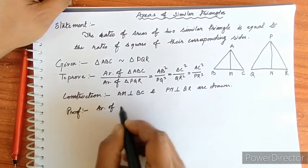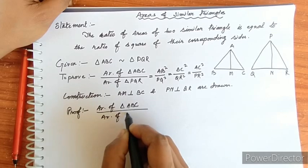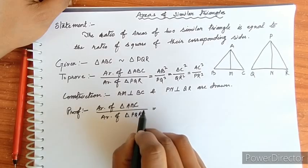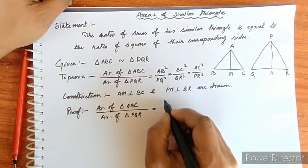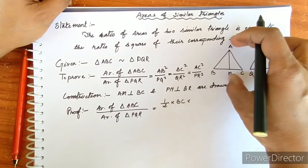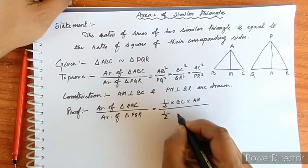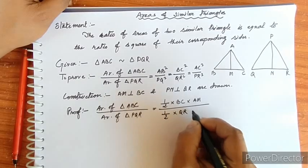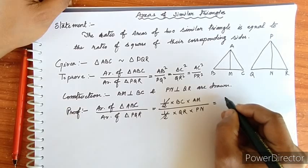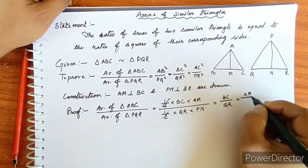Area of triangle ABC by area of triangle PQR: using the area formula, that is half base BC times altitude AM, divided by half base QR times perpendicular PN. The halves cancel, giving BC by QR equal to AM by PN.